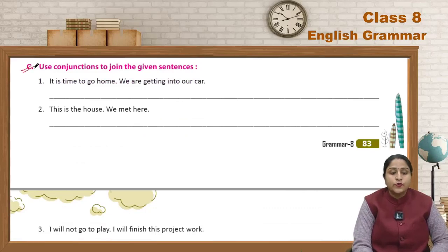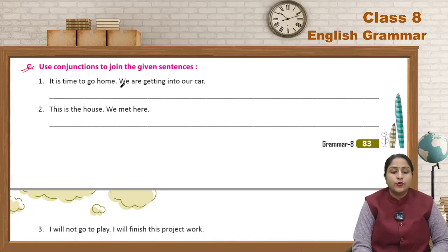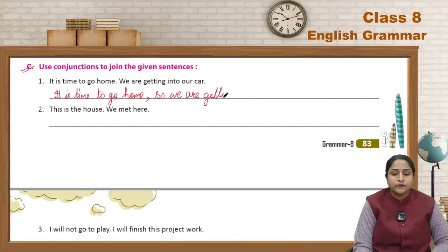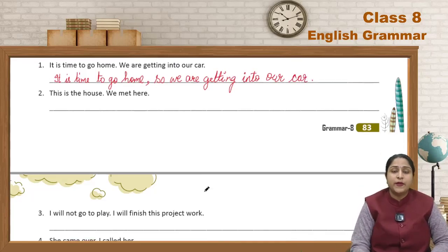Now, Exercise C — Use conjunctions to join the given sentences. First: 'It is time to go home' and 'We are getting into our car' — joined as: 'It is time to go home, so we are getting into our car.' Next: 'This is the house' and 'We met here' — joined as: 'This is the house where we met.'